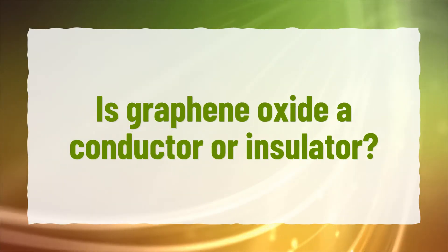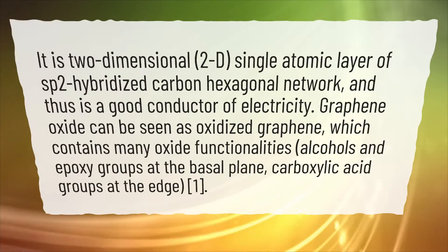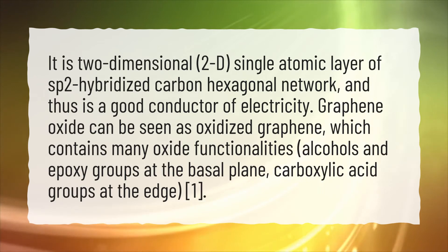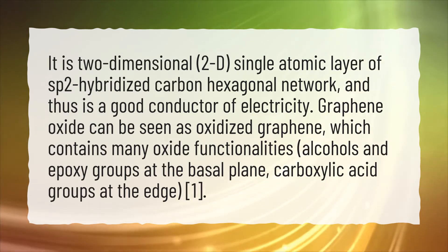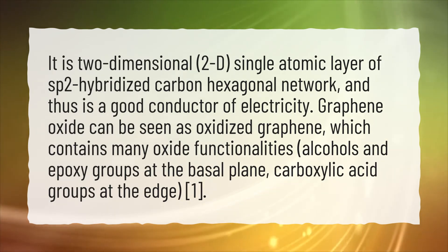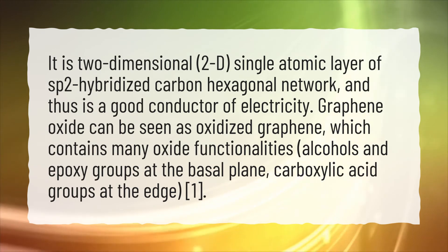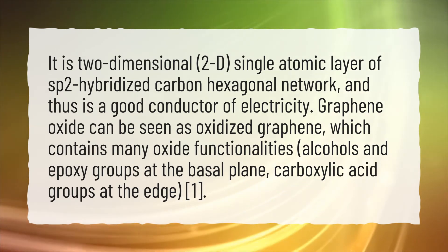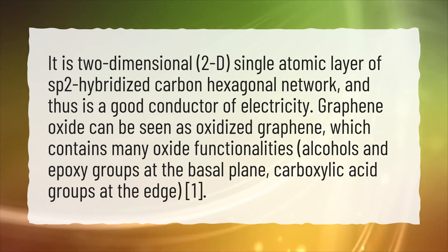Is graphene oxide a conductor or insulator? Graphene is a two-dimensional (2D), single-atomic layer of sp2 hybridized carbon hexagonal network, and thus is a good conductor of electricity. Graphene oxide can be seen as oxidized graphene, which contains many oxide functionalities — alcohols and epoxy groups at the basal plane, and carboxylic acid groups at the edge.